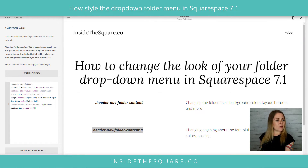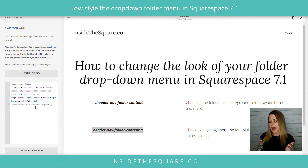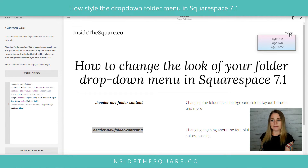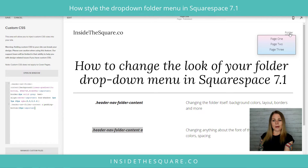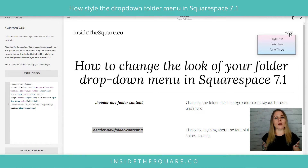Now we have a border at the bottom of those active links. I don't like how close together they are, so let's add some padding. I'll say 'padding-bottom: 10px !important'. There we go — now they've scooted out a little bit more.